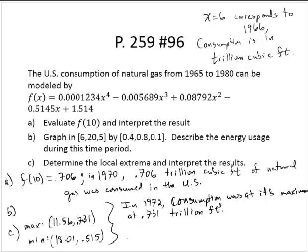And then 18, that would be in 1988. No, it wouldn't. Let's see. 60 plus 18, 1978, excuse me. In 1978, consumption was at its minimum at 0.515 trillion cubic feet.